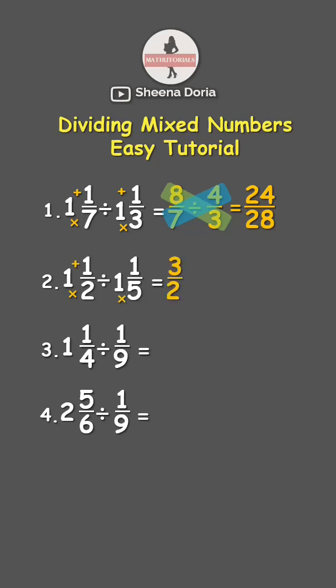Next, 5 times 1 is 5, plus 1 is 6. Then keep denominator 5. Now let's cross multiply. 3 times 5 is 15, while 2 times 6 is 12. Our answer, 15 over 12.